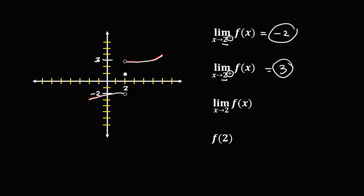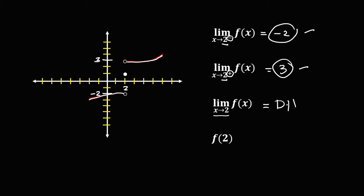Then for this limit as x approaches positive 2, since the limit from positive 2 to the left is not equal to the limit from positive 2 to the right, therefore this limit does not exist.